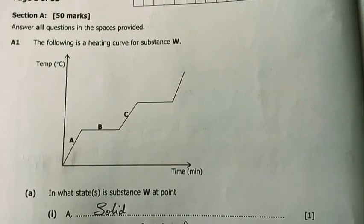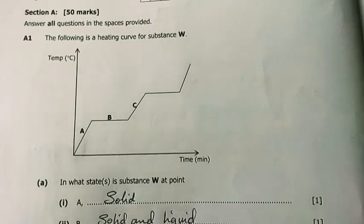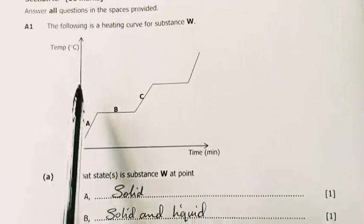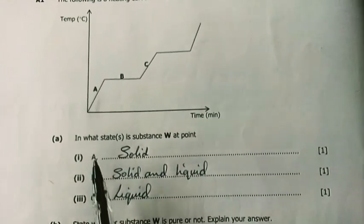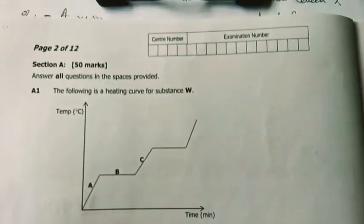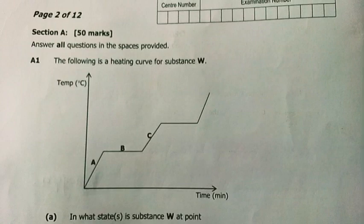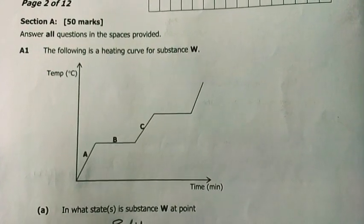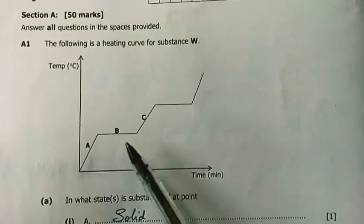So we get to question 1 of Section A. The following is a heating curve for substance W. This is our y-axis representing temperature in degrees Celsius and that's our time in minutes. And so first question which is A.